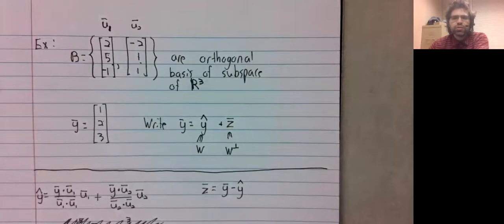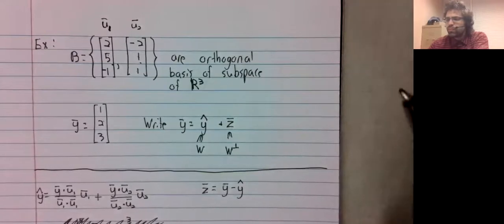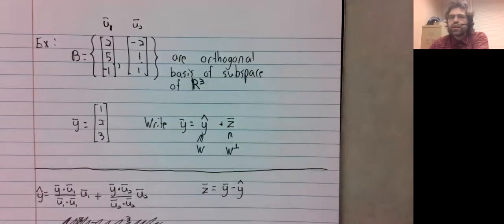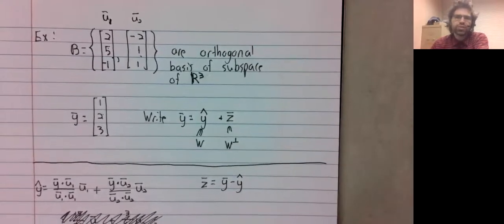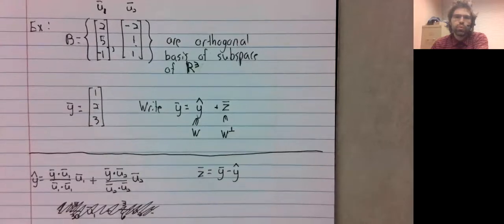That's called the Gram-Schmidt process. So even though we need an orthogonal basis, that's okay. We can always get an orthogonal basis.